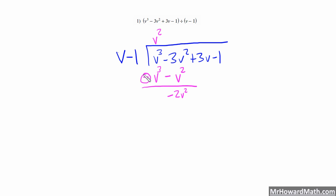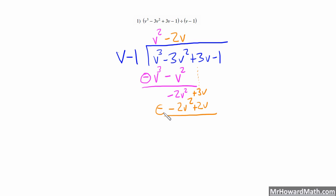Now I'm looking for what times v equals negative 2v squared, and that would be minus 2v. So minus 2v times v is negative 2v squared. I needed to bring down this 3v, so plus 3v here — we always bring down the next term. Now negative 2v times negative 1 gives me a plus 2v. We're still subtracting, so I do the opposite of this sign, so these two cancel. And 3v minus 2v just gives me v.